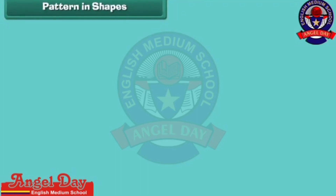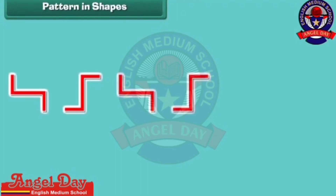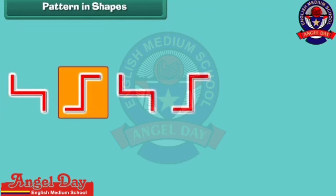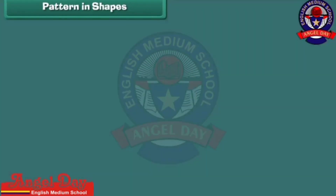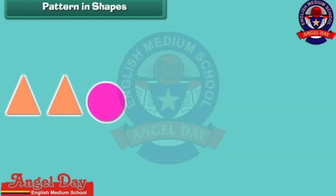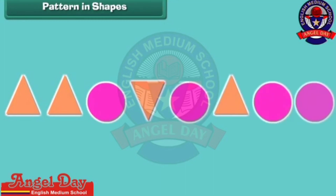Pattern in shapes. Look carefully at this pattern. A shape is placed in sleeping position first and then in standing position. These positions are repeated in the same order many more times. Now look at this arrangement of triangles and circles. Can we call it a pattern? No, we can't, because the shapes do not repeat in a definite order.